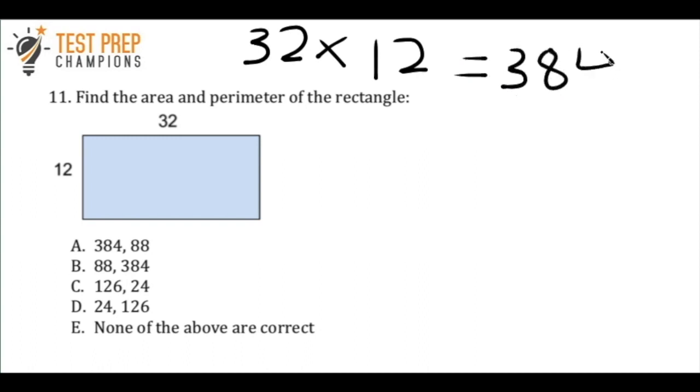Now it's time to move on to the perimeter. So basically what you have to recognize here is that they're not going to write it in for you, but for a rectangle, the opposite sides are going to be equal. If this side right here is 12, that means that the opposite side,